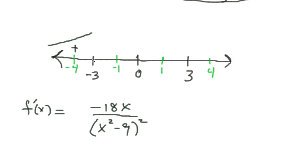Now we take 1, plug it in, and negative 18 times 1 is going to be a negative number, so we know that's negative. So that's going to be decreasing. Plug 4 in and that's going to end up being a negative number times 4 is a negative.